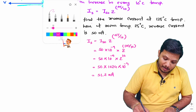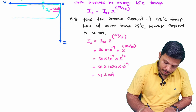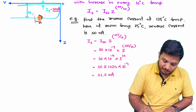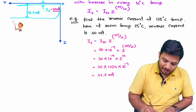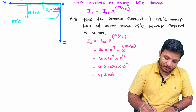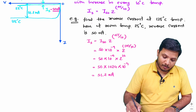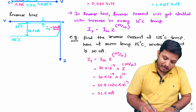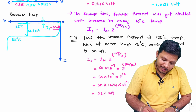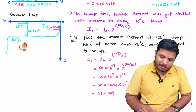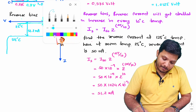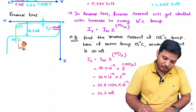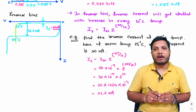The new characteristics show a reverse current of 51.2 microamperes at 125 degrees Celsius, compared to 50 nanoamperes at the previous temperature of 25 degrees Celsius. One more thing to note is that breakdown voltage also increases with increasing temperature, but there is no fixed calculation for this — it simply increases, as shown in the characteristics.